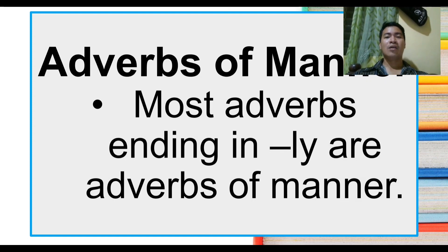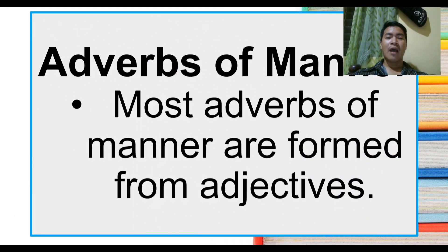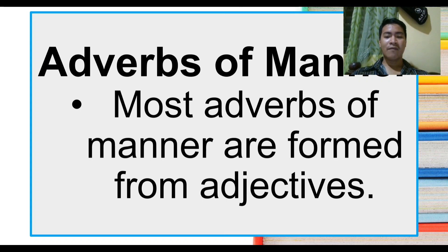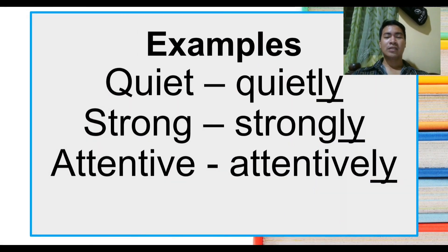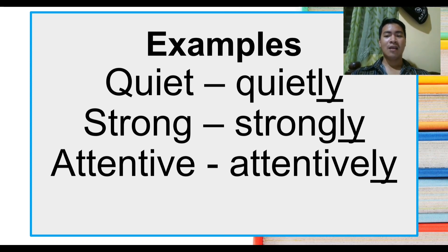Adverbs of manner — most adverbs ending in -ly are adverbs of manner. Most adverbs of manner are formed from adjectives. For example: quiet becomes quietly, strong becomes strongly, attentive becomes attentively. As you can see, the -ly ending is underlined. Words or adjectives ending in -ly are adverbs.